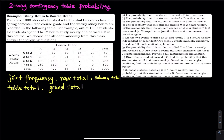For example, out of 1,000 students, 12 students spend 0 to 2 hours — that is definitely a typo in the problem, it should be 0 to 2 — studying weekly and earn a B in this course. We choose one student from this class randomly to answer the following questions.